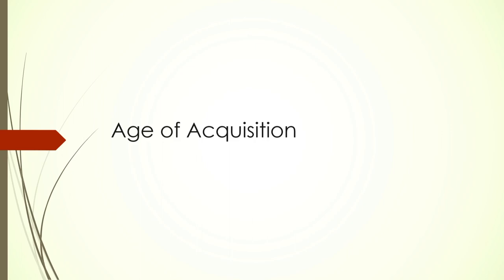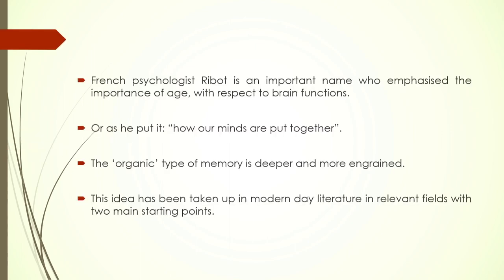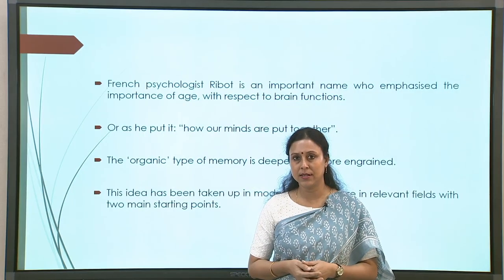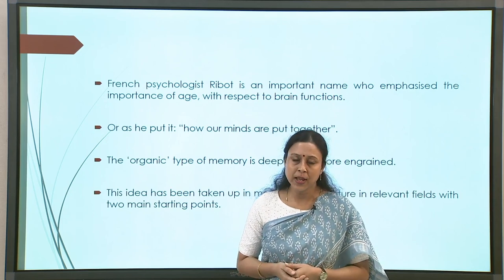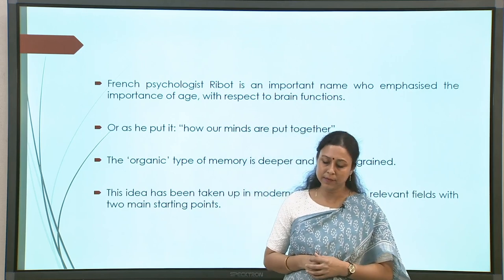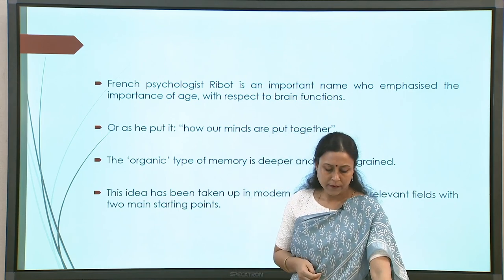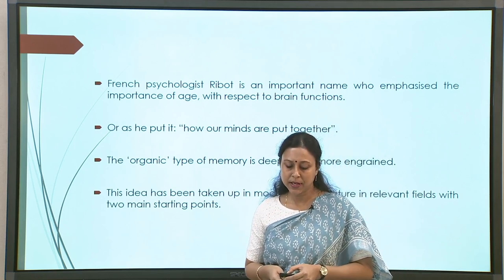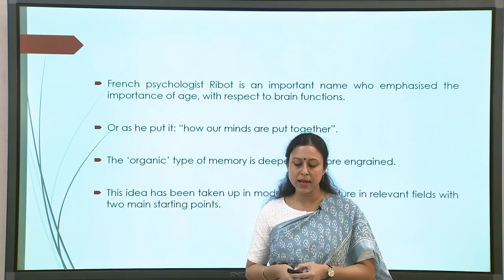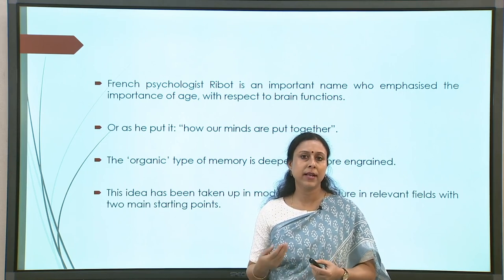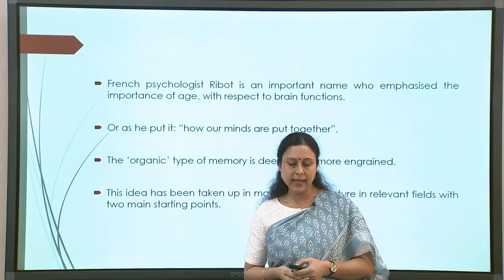Let us start with the first and most important variable: age of acquisition. If you remember, we have already looked at aphasia data and how Ribot's rule says that the language learned first — in infancy — will be less affected compared to the second language learned later in life, because Ribot's rule says that any memory connected to infancy will be more resistant to any kind of damage. The brain develops over a period of time through different stages, and hence age needs to be taken into account.